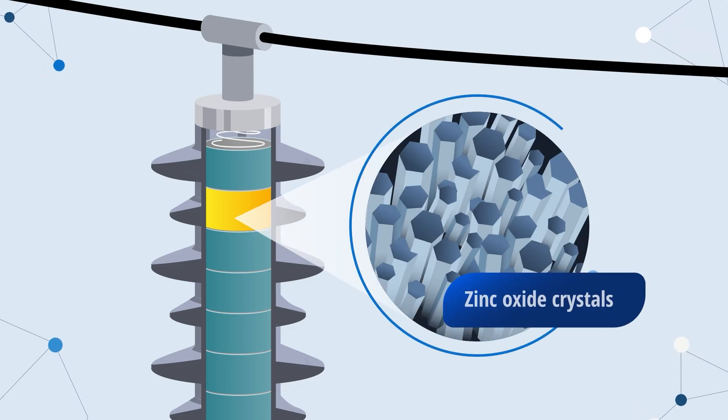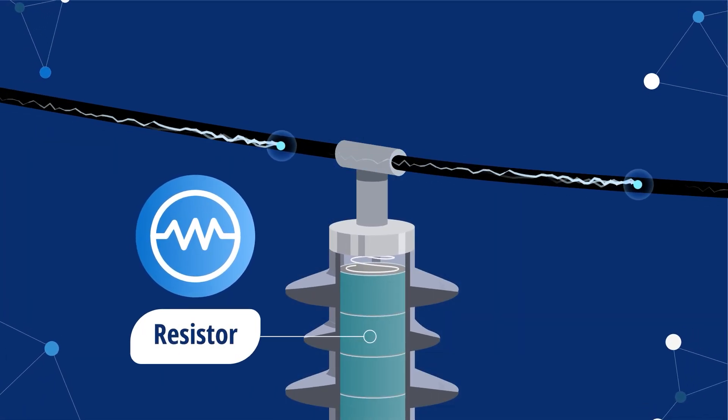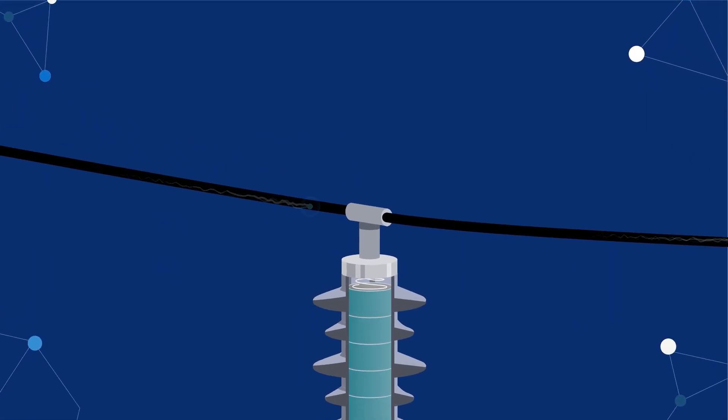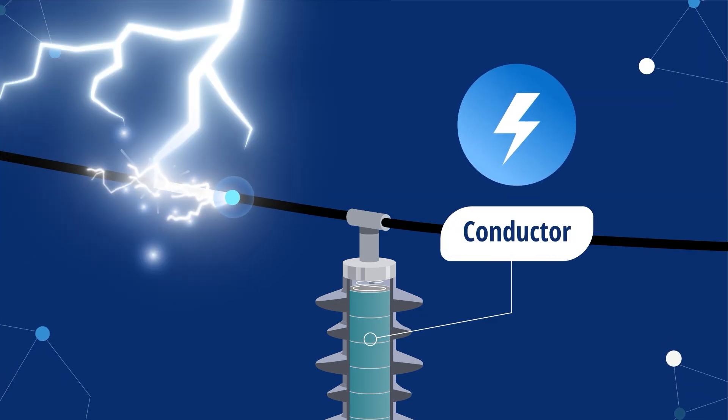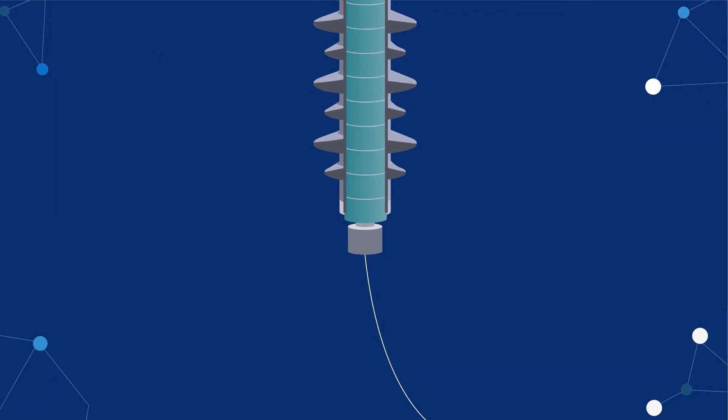Made primarily of zinc oxide crystals, MOVs act as resistors during normal operating voltages, but instantly switch to conductors during a lightning strike to safely divert excess energy away from the system.